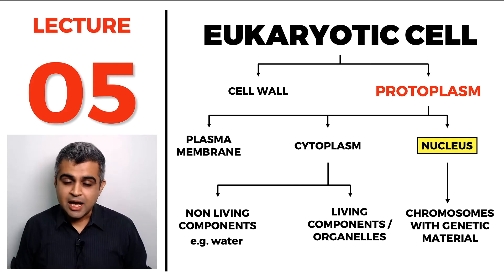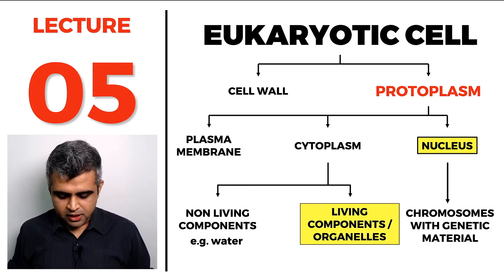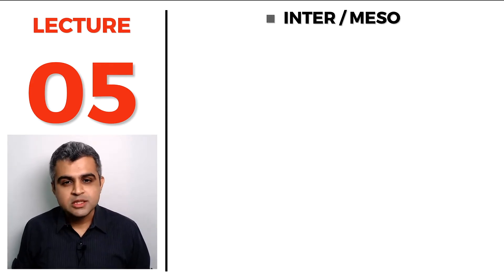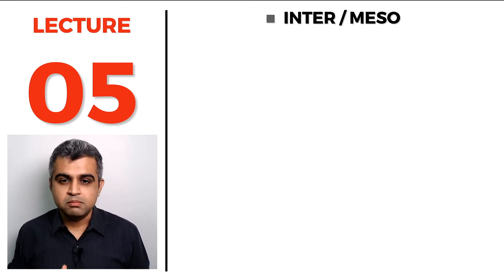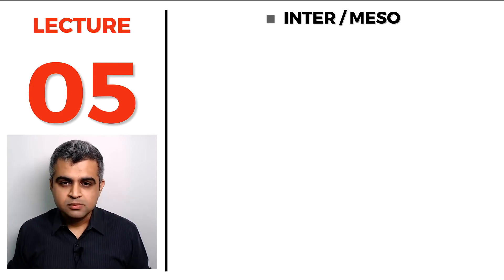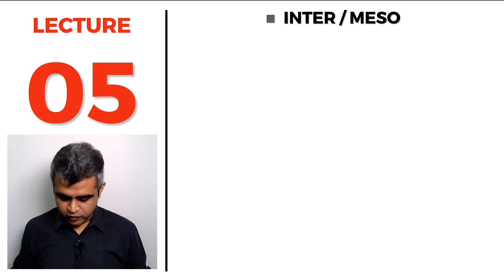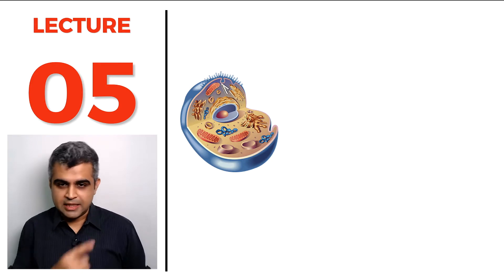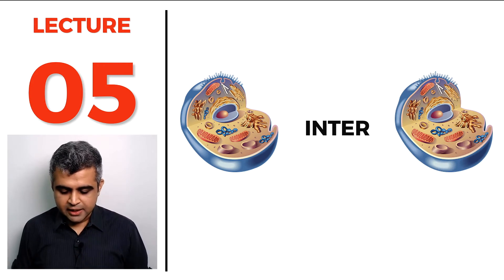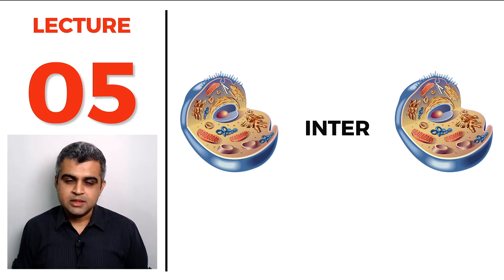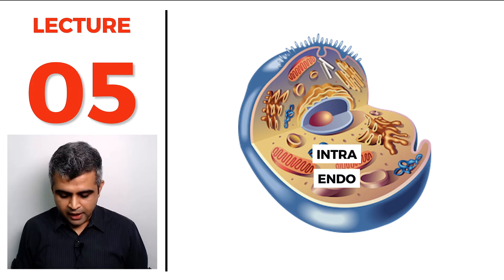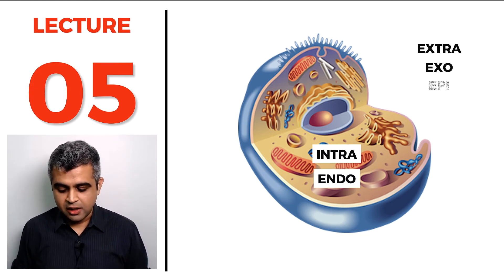In lecture number five, we started talking about living components and cell organelles, beginning with Greek and Latin words. Inter or meso means in between — for example, the area between two cells is the intercellular space. Intra or endo means inside — whatever is on the inside of a cell. Extra, exo, epi, or peri means outside.